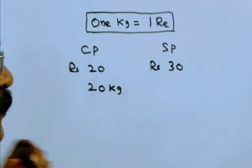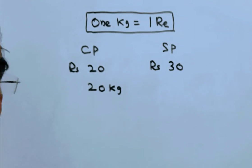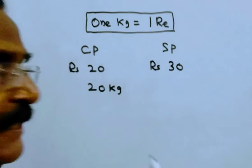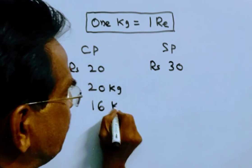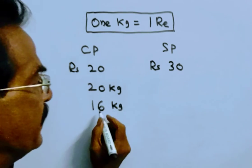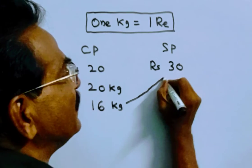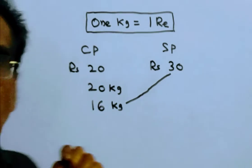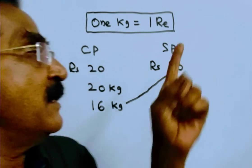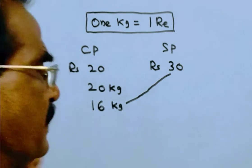So for 20 kg, he uses 20 into 800 grams equals 16 kg. That means he is giving only 16 kg mangoes for rupees 30. That means cost price 16 rupees, selling price 30 rupees.